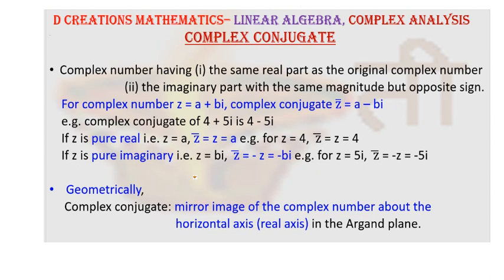So for a complex number z = a + bi, its conjugate is a - bi. If you take some numbers, for example, if you take complex number 4 + 5i, its conjugate will be 4 - 5i.